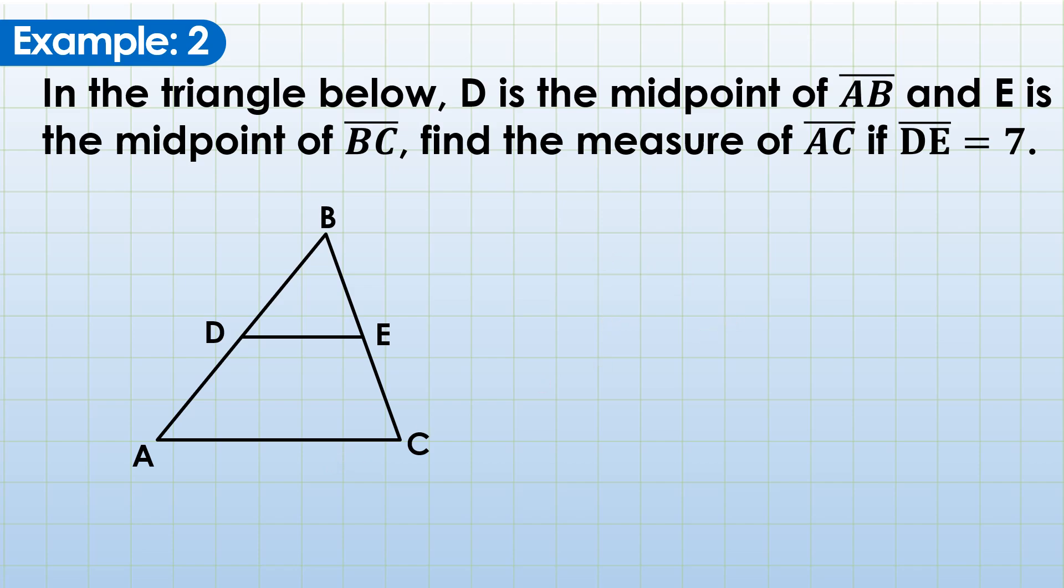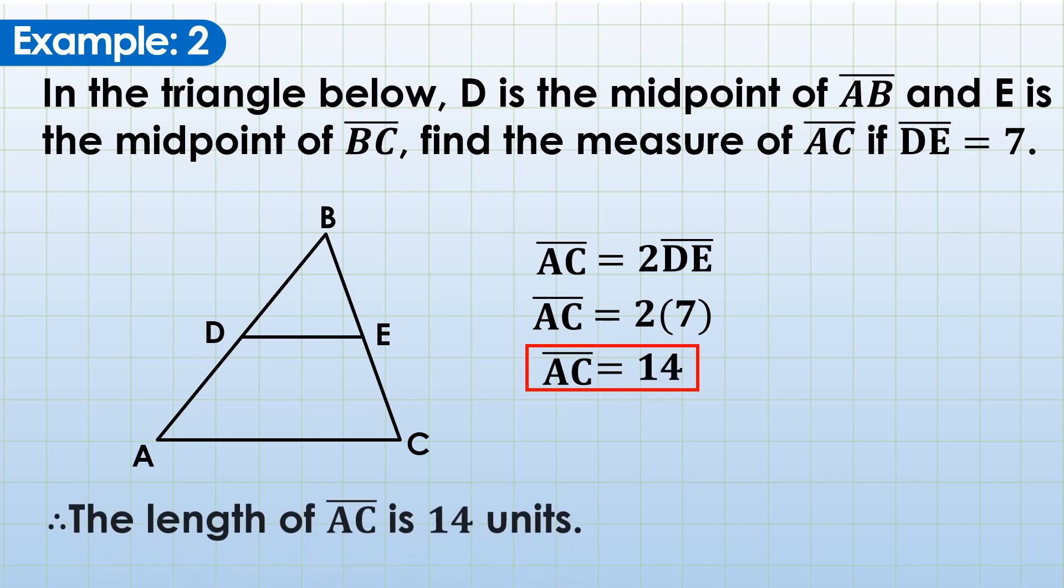In your solution, you write first what you are looking for, which is AC. And we know that the third side AC is twice the measure of DE. So you write AC is equal to 2 times DE, or 2DE. Substitution, AC equals 2 times 7. 2 times 7 is of course 14. Same answer. Conclusion, the length of AC is 14 units.